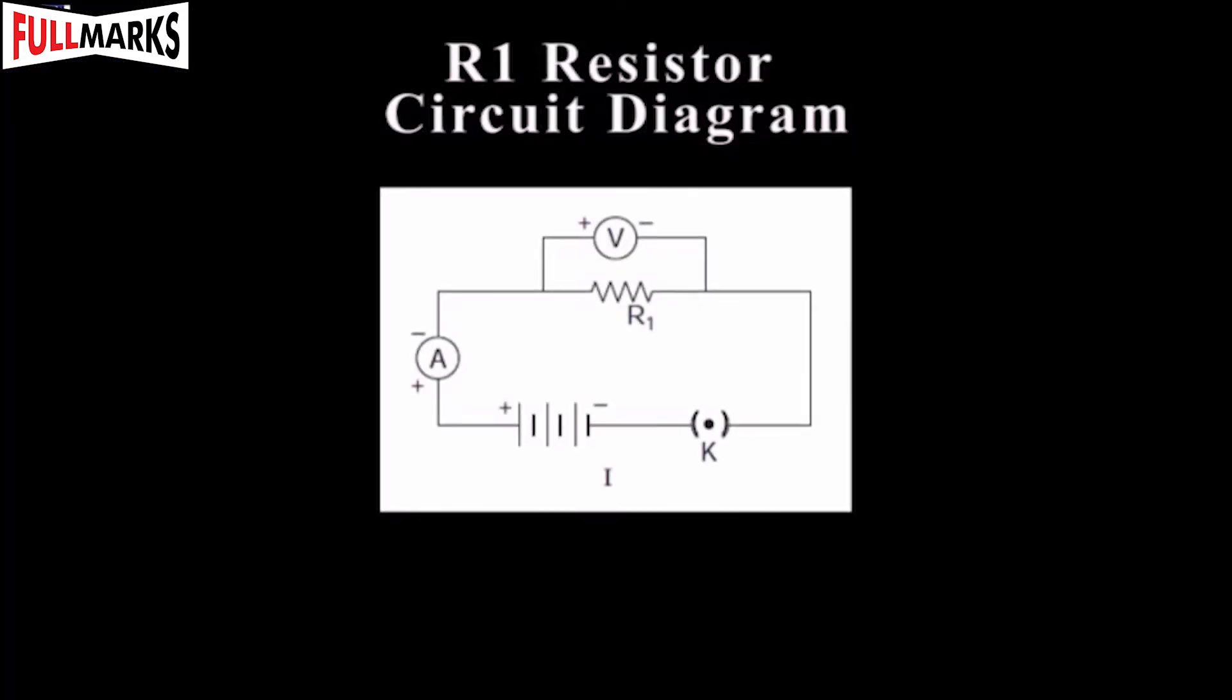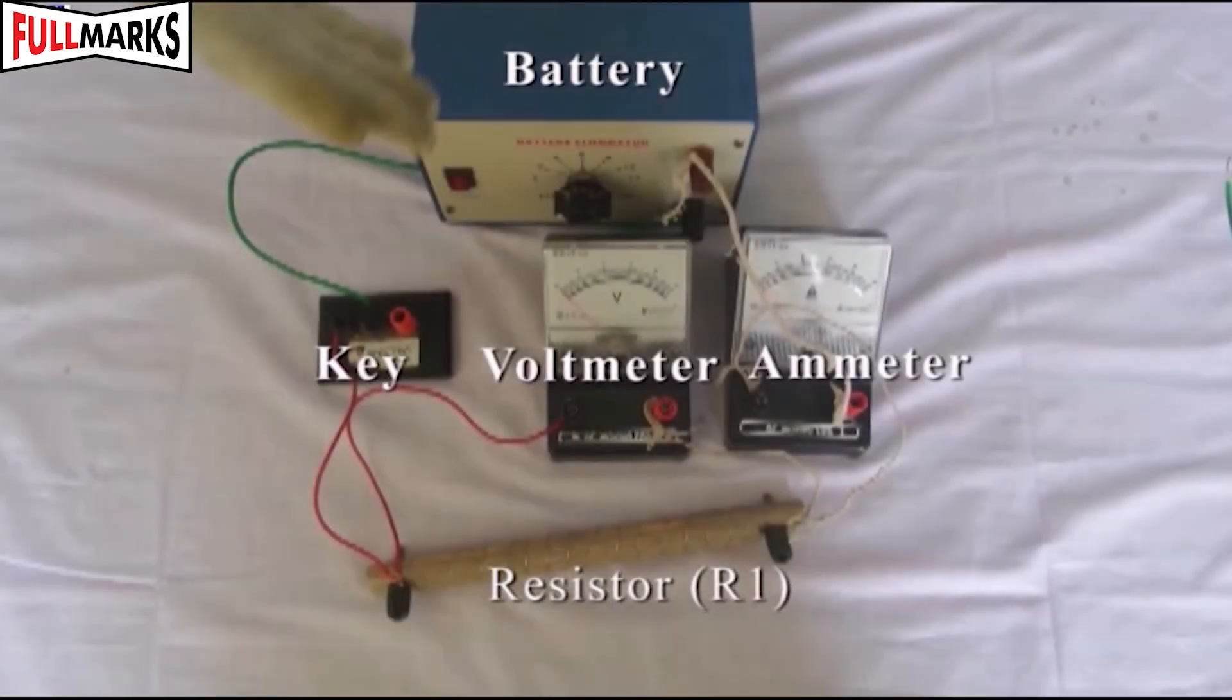Procedure: Connect the circuit as shown in the figure. Note three readings of ammeter and voltmeter for the resistors R1 and R2 separately.